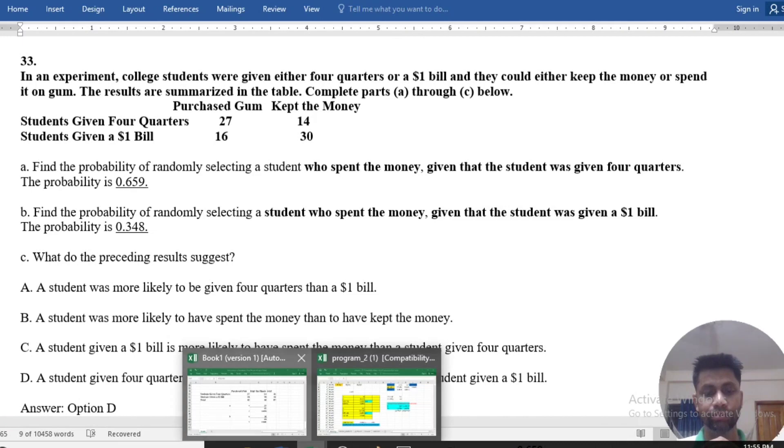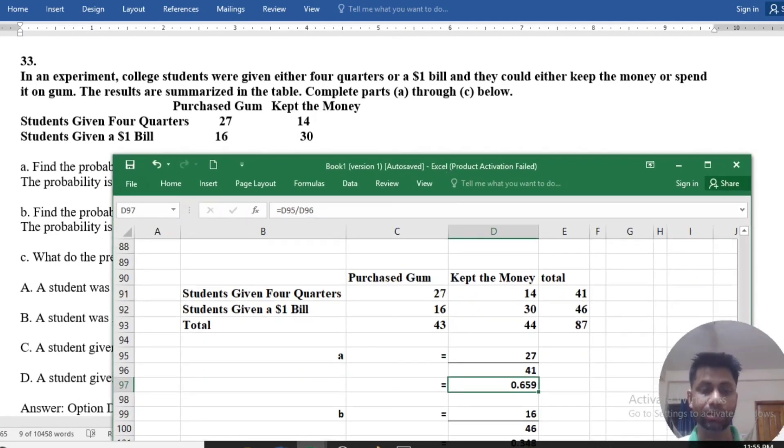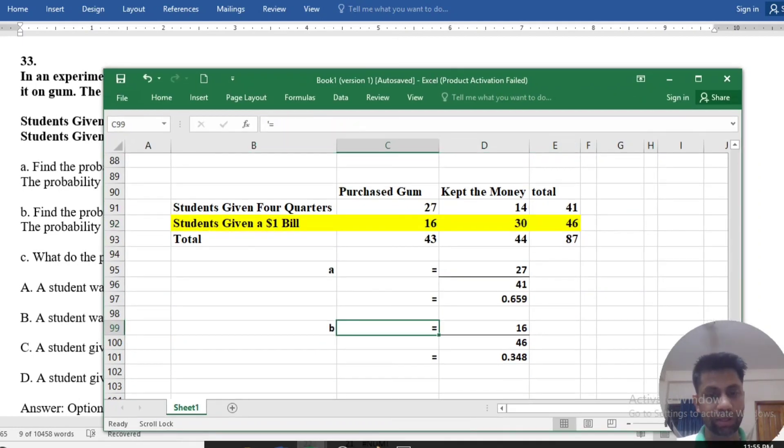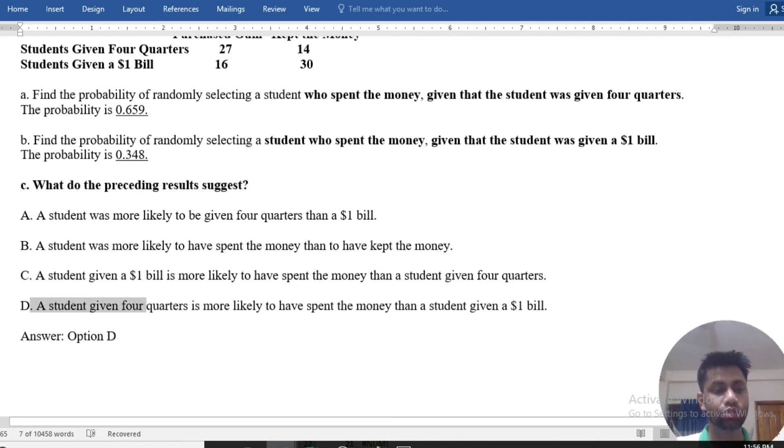Now the second question: who spent the money given the student was given a $1 bill? Who spent the money means they purchased the gum. So here is the probability 16 divided by 46, so the answer is 0.348.